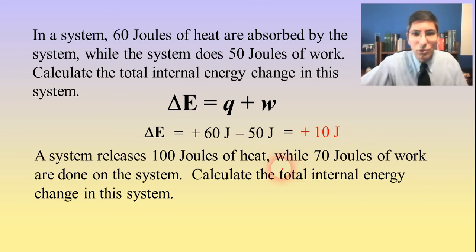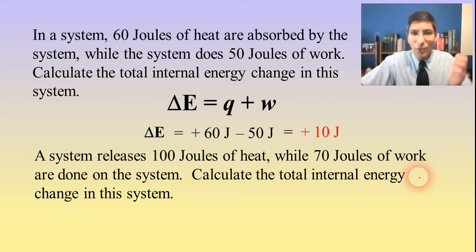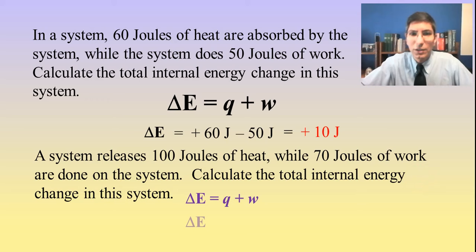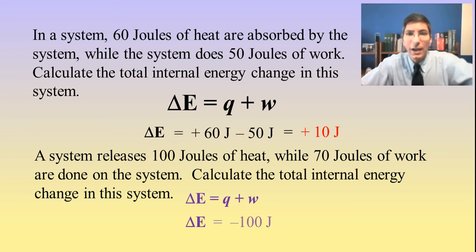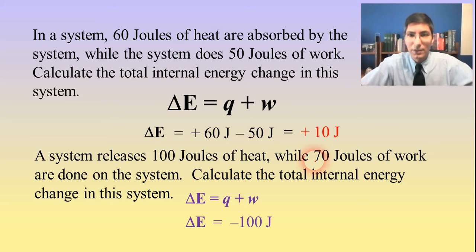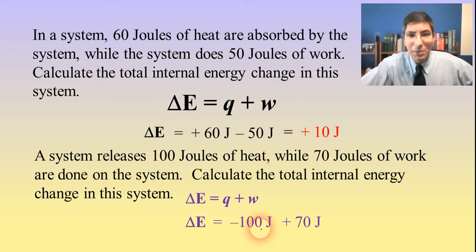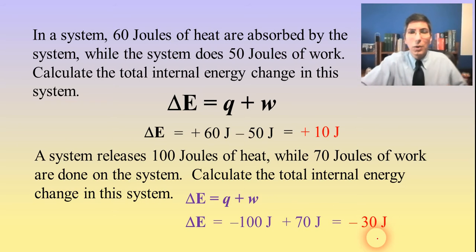Let's try another example. A system releases 100 joules of heat while 70 joules of work are done on the system. Calculate delta E, the total internal energy change. Q is negative 100 joules because the system is losing heat. The work is positive 70 joules because it's done on the system. So 70 minus 100 gives us negative 30 joules. That's how we calculate total internal energy change.